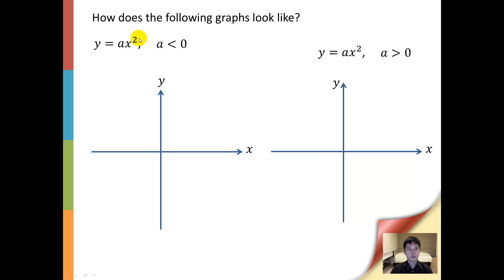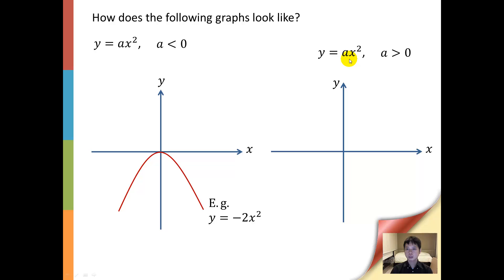Do you remember how to sketch this quadratic curve with a negative coefficient? It will look like an n-shape — for example, y equals negative 2x squared. And how do you draw a quadratic curve with a positive coefficient of x squared? It will look like a u-shape — for example, y equals positive 2x squared.